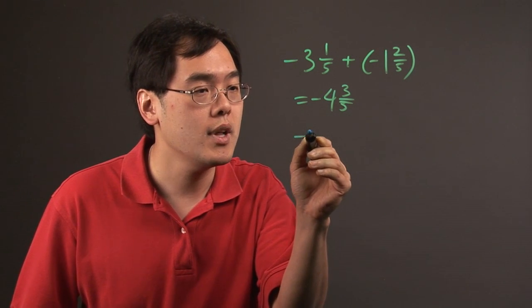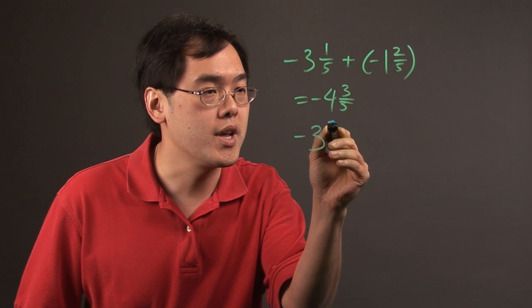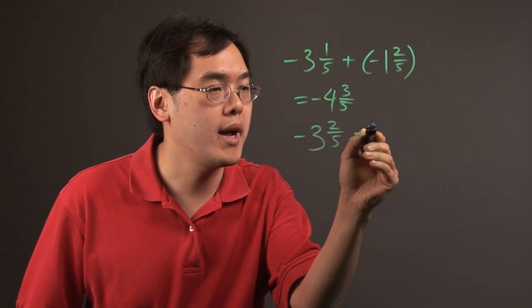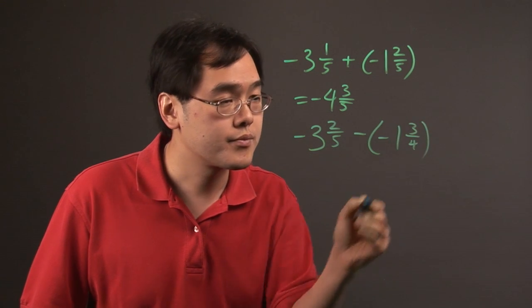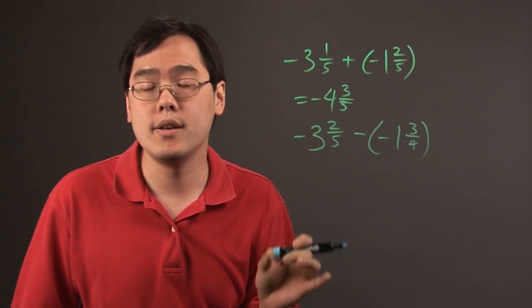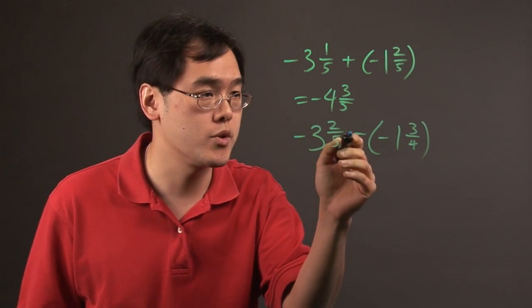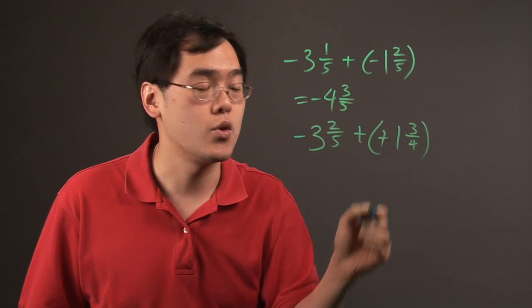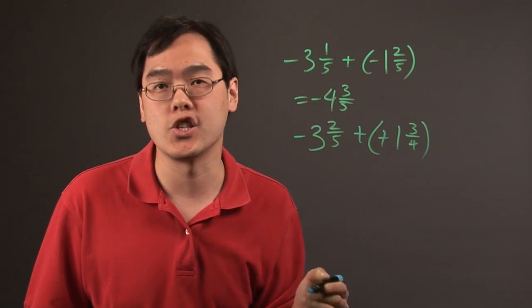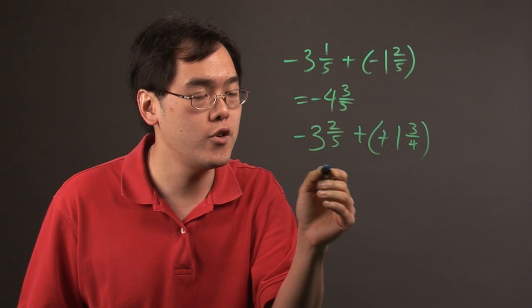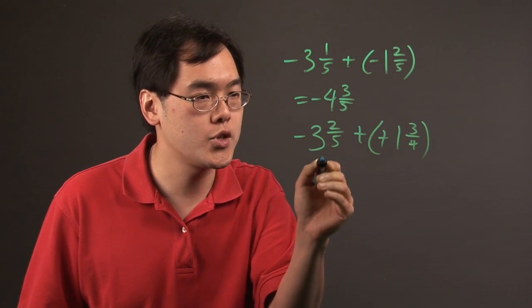if you have negative three and two-fifths minus negative one and three-quarters, you know you're not making the number more negative anymore because when you're subtracting by a negative number, you're really adding. So you're subtracting still, but you have to change the signs going forward. So first thing I recommend is convert this to an improper fraction.